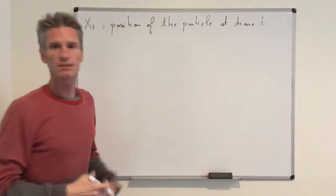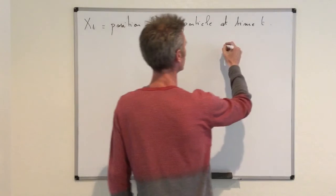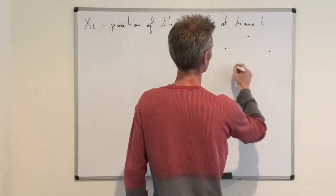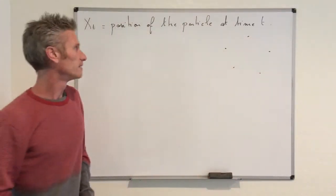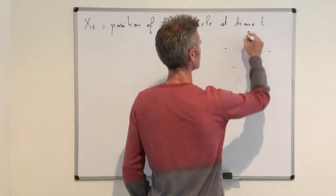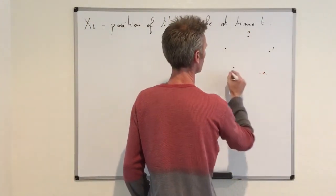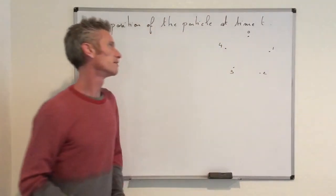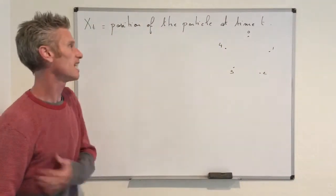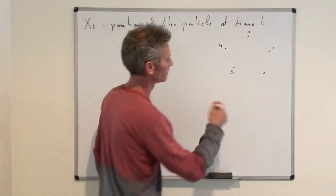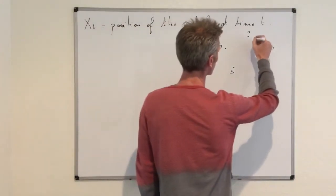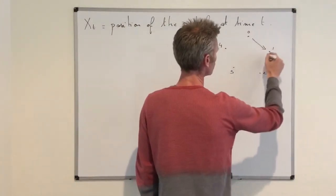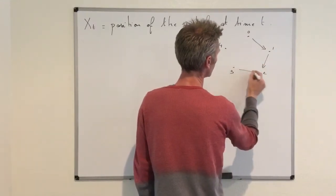Let's fix some vertices — say five of them — labeled 0, 1, 2, 3, 4. So in this case we have five vertices and n equals five. According to the problem, we move from 0 to 1, 1 to 2, and so on.